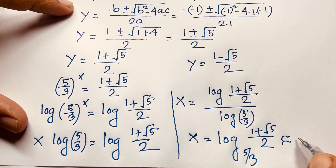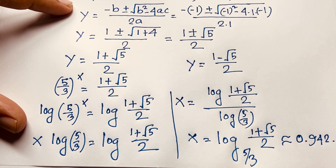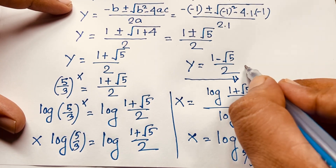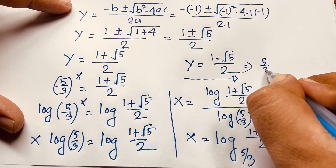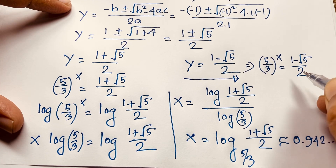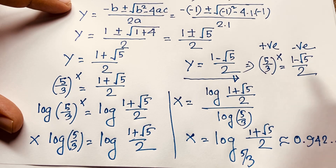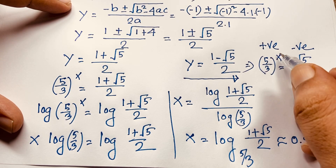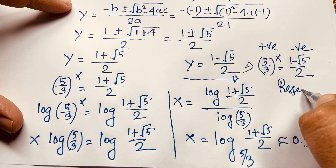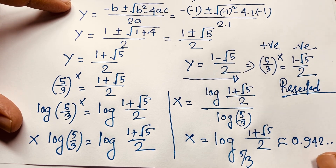If we use a calculator, we find x ≈ 0.942. But we must check the other solution: (5/3)^x = (1 − √5)/2. This is not possible because (5/3)^x is always positive, but (1 − √5)/2 is a negative value. So that solution is rejected. Our only valid answer is x = log_{5/3}((1 + √5)/2).